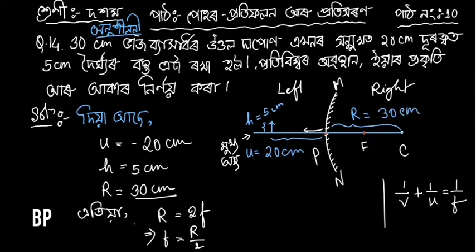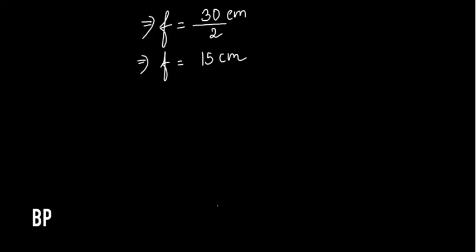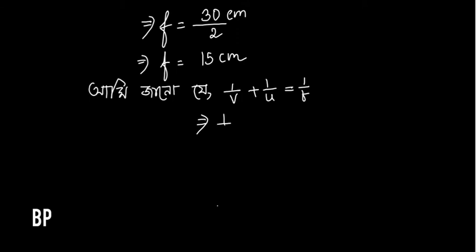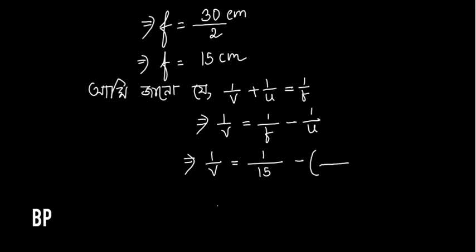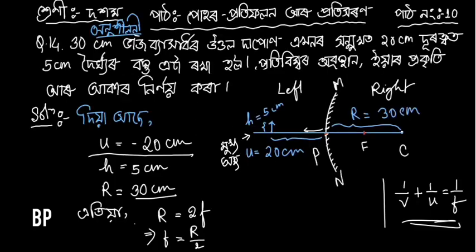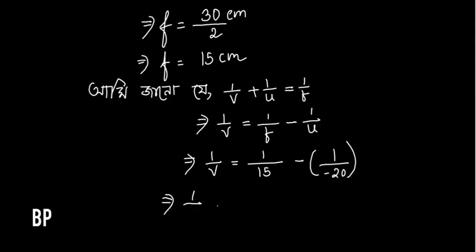So, 1 by V is equal to 1 by F minus 1 by U. Here U is equal to minus 20 cm. So, 1 by V is equal to 1 by 15 minus 1 by U, where U is minus 20 cm. So, 1 by V is equal to 1 by 15 minus 1 by minus 20.